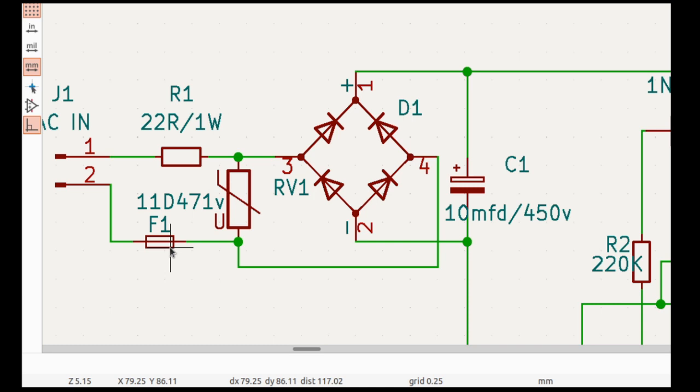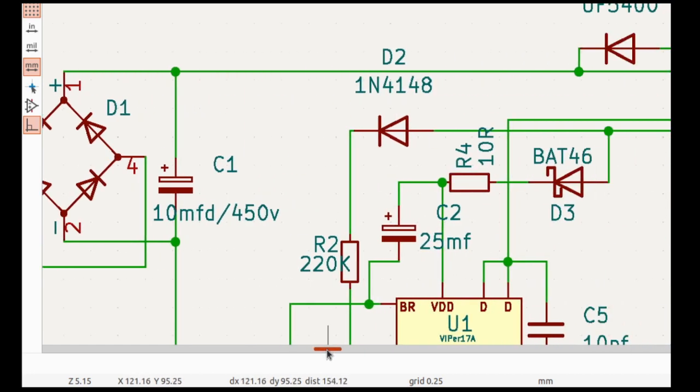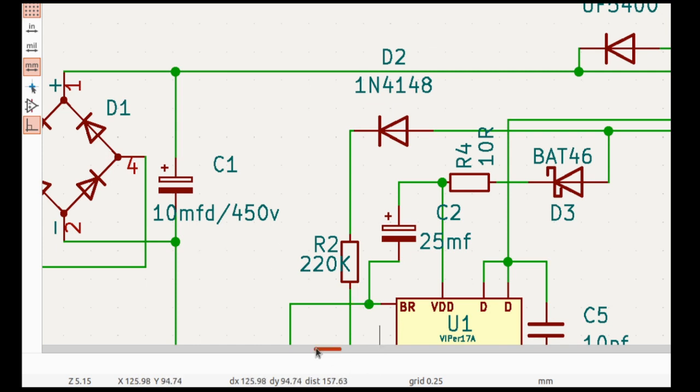You can use it in line or neutral, no problem at all. That is a varistor which protects against spikes from the outside. After that, filter - all of this you know.